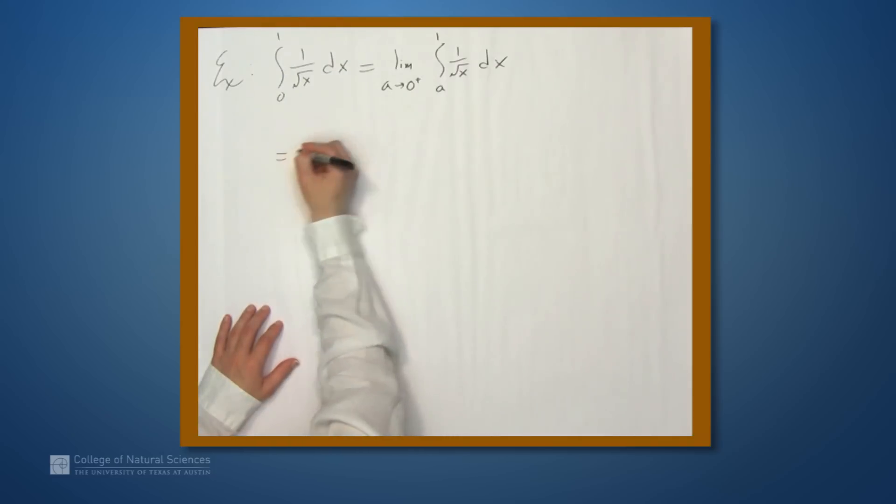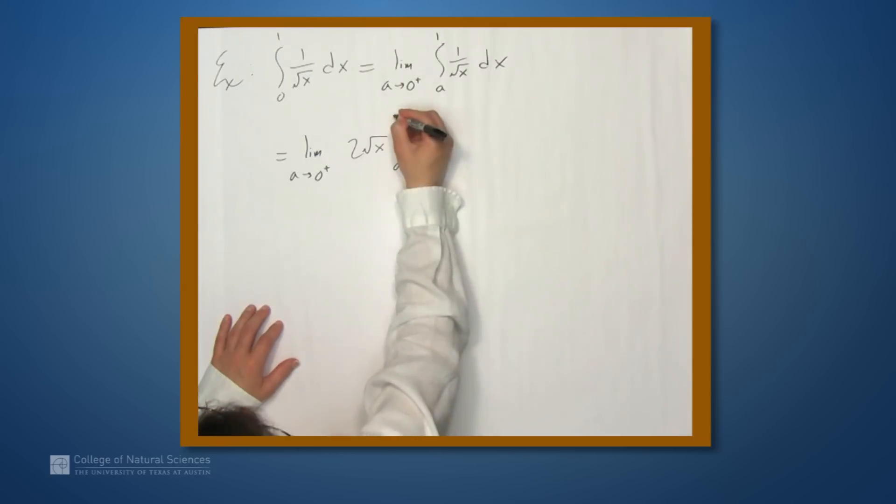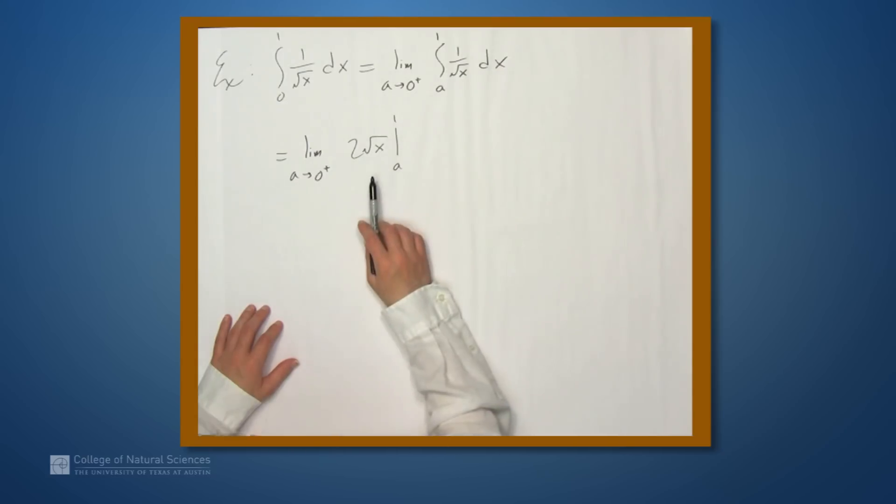And this is the limit as a approaches 0 from above of 2 times the square root of x evaluated between a and 1, because 2 times the square root of x is an antiderivative of 1 over x.